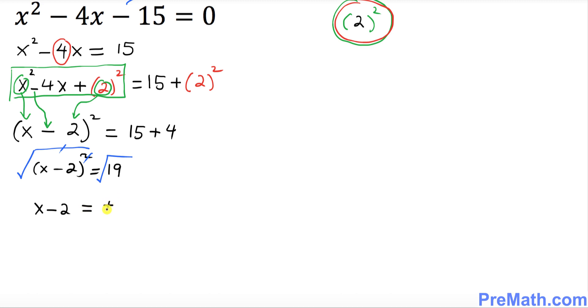This square and square root, they undo each other, so we simply got x - 2 equal to plus or minus √19. Now I want you to just simply add 2 on both sides. So we simply get x = 2 plus or minus √19.